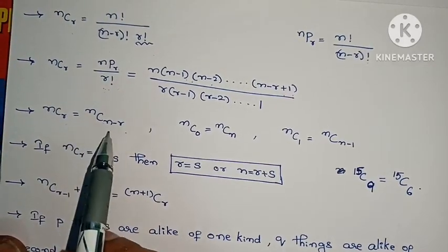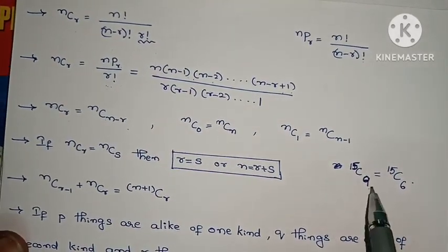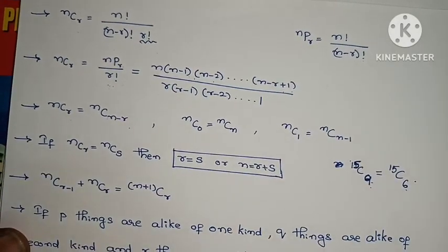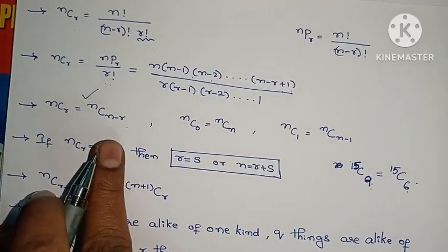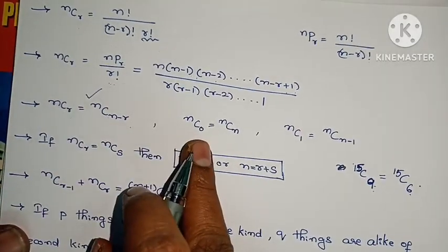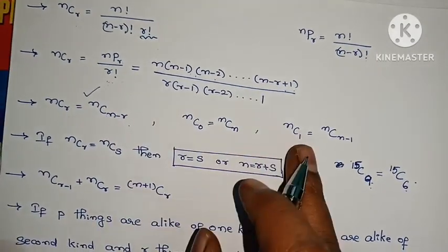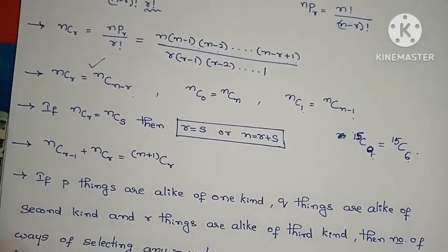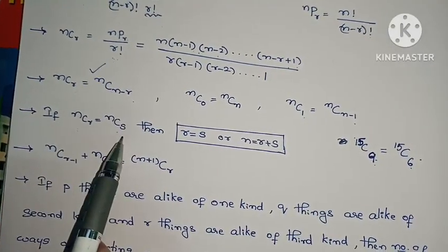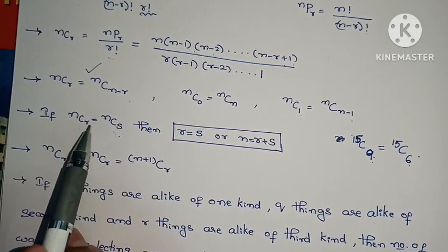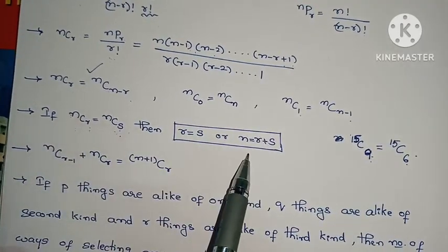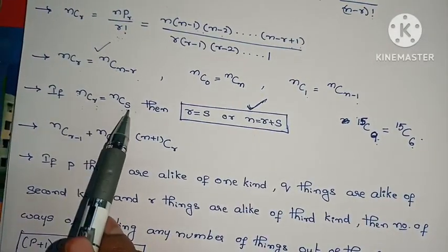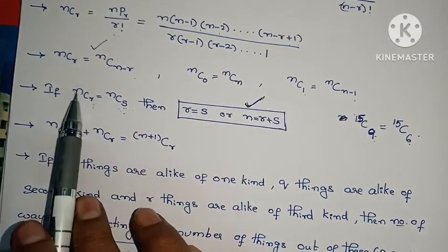NCR equals NC(n-r). For example, 15C9 equals 15C6 since 15 minus 9 is 6. NC0 equals NCn — both equal 1. NC1 equals n, and NC(n-1) equals n. If NCr equals NCs, then either r equals s, or n equals r plus s. This two-mark property is very important.